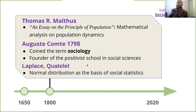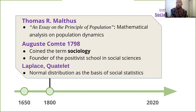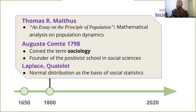Auguste Comte was very much inspired by Newtonian physics — he was actually the first to coin the term 'sociology' and founded the very influential positivist school in social sciences. He basically wanted to call his field 'social physics,' though others like Ketele were already using that term. Positivists strongly rejected metaphysics and religious thought as a basis for gaining understanding about social phenomena.